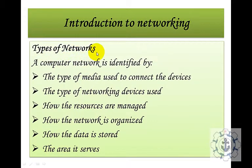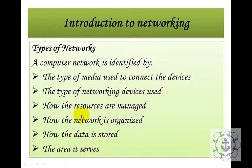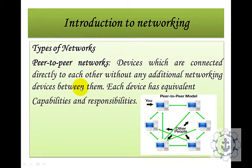Next we are going to see types of networks. A computer network can be identified by: the type of media used to connect the devices, the type of networking device used, how the resources are managed, how the network is organized, how the data is stored, and the area it covers. Based on these parameters, you can classify the types of networks.